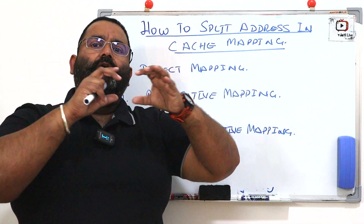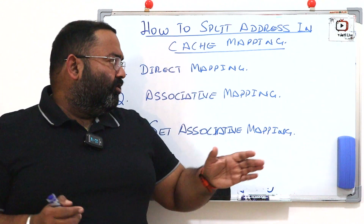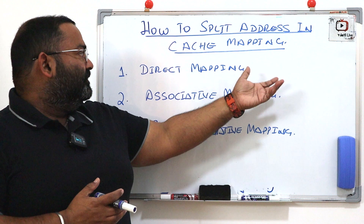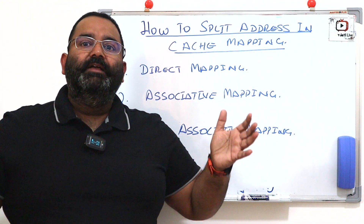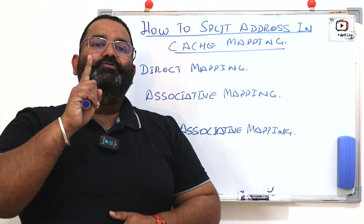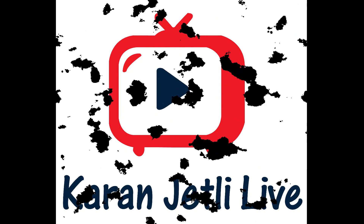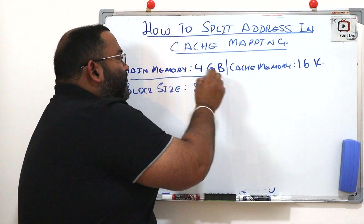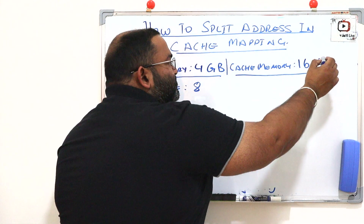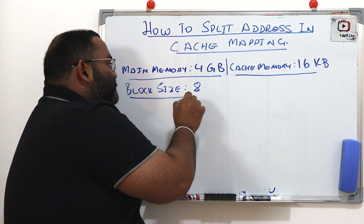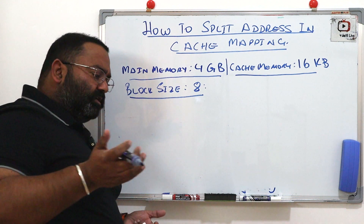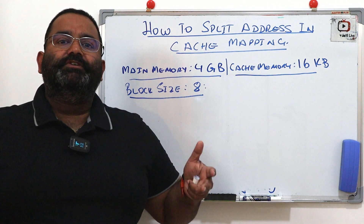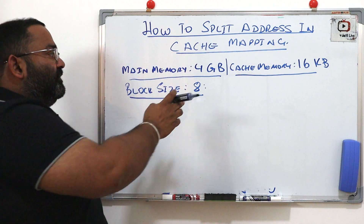In this video we are going to discuss how, when we have address bits, to calculate address bits and how we can split them according to different mapping mechanisms. The aim of this video is to teach you how to calculate the split of addresses in different mapping techniques. Suppose this data is given to us: main memory is 4 GB, cache memory is 16 kilobytes, block size is 8, and they ask you to split the address according to direct mapping, associative mapping, and set associative mapping.